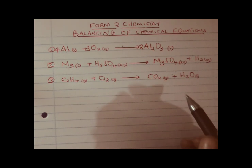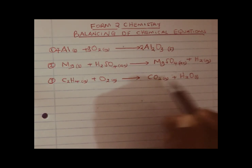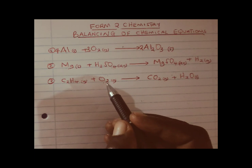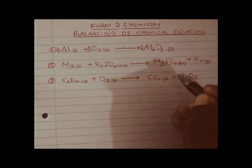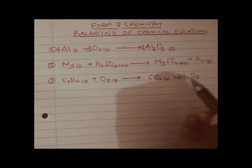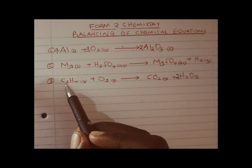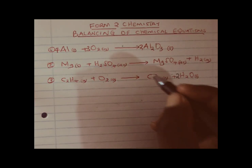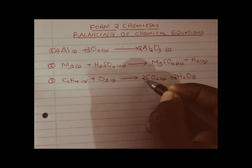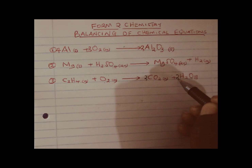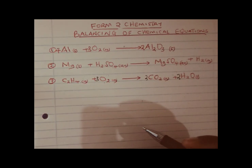On the product side we have 2 oxygens from CO2 plus 1 from water — 3 oxygens in total. On the reactant side we have 2. We begin with where we have an odd number. We have 1 oxygen in water, so to make it even we multiply by 2, giving 2 oxygens from water plus 2 from CO2, totalling 4 oxygens. Looking at carbon atoms: we have 2 on the reactant side and 1 on the product side, so we write 2 in front of CO2. By writing 2 in front of CO2, oxygens shift from 2 to 4 — that is 2 times 2 equals 4, plus 2 equals 6 — so we write 3 in front of oxygen gas.